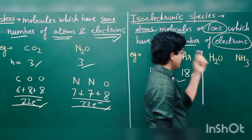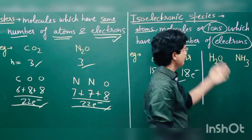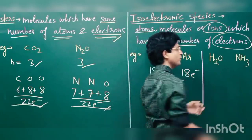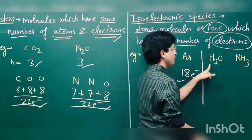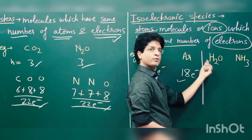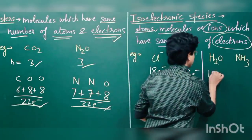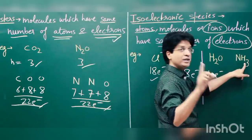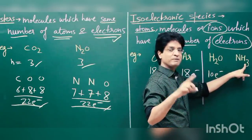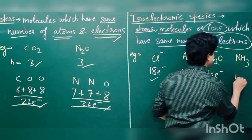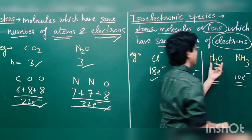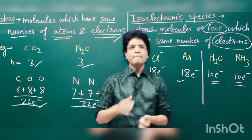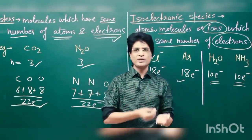Similarly, water (H2O) and ammonia (NH3) also qualify as isoelectronic species. In water: hydrogen has 1 electron, another hydrogen has 1 electron, oxygen has 8 — total 10 electrons. In ammonia: nitrogen has 7 electrons, and three hydrogens contribute 3 more — total 10 electrons. So both H2O and NH3 are isoelectronic, having 10 electrons each.